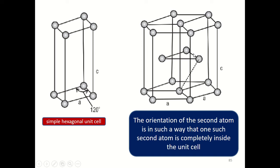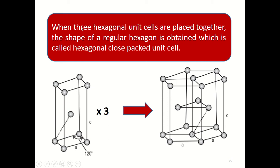When three hexagonal unit cells are placed together, the shape of a regular hexagon is obtained, which is called the hexagonal close-packed unit cell. In a hexagonal unit cell you can see the corner atoms, and in addition each hexagonal unit cell will have one atom completely inside it. So this is one unit cell for a hexagonal close-packed crystal structure, and when three such hexagonal unit cells are placed together the hexagonal close-packed unit cell is formed.